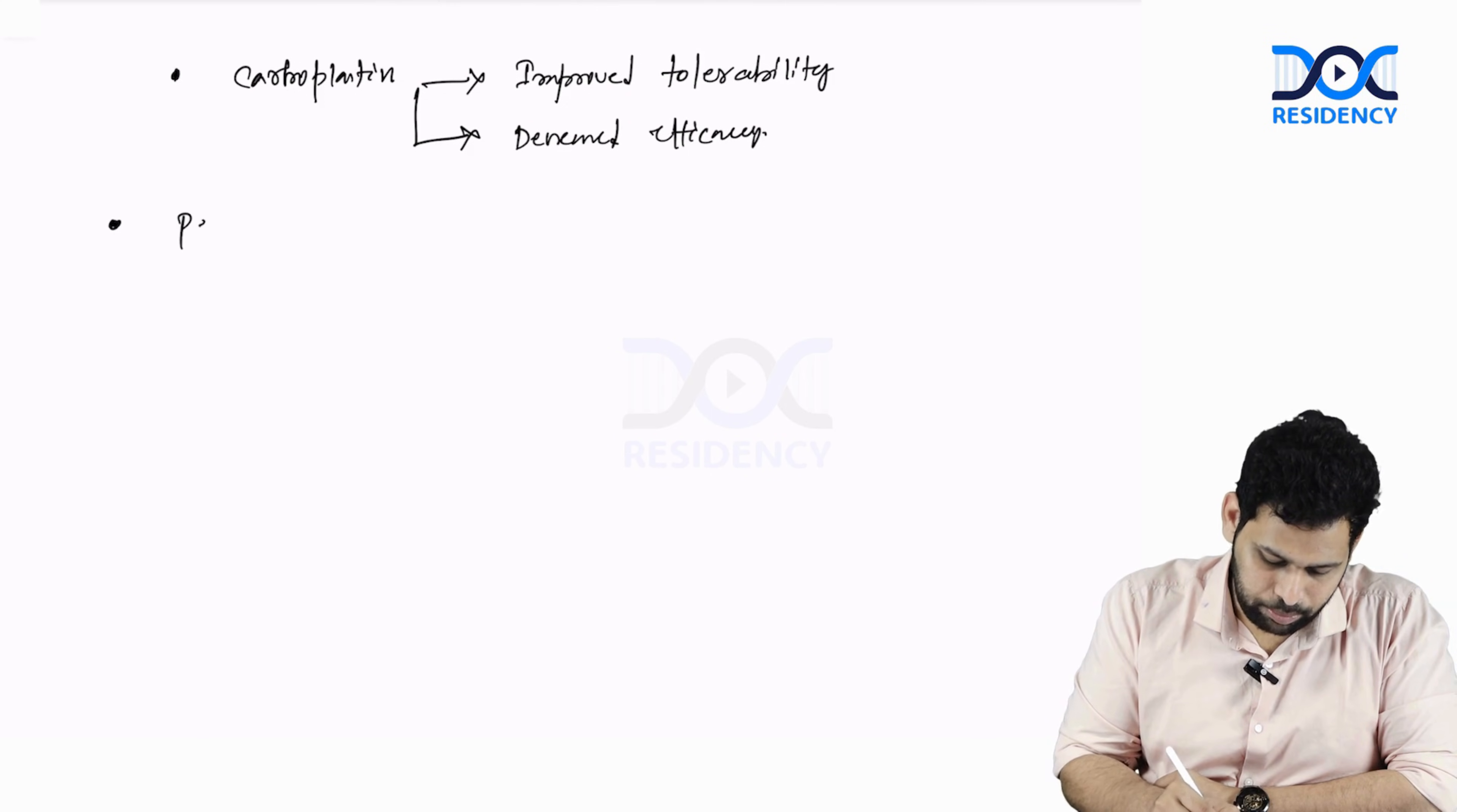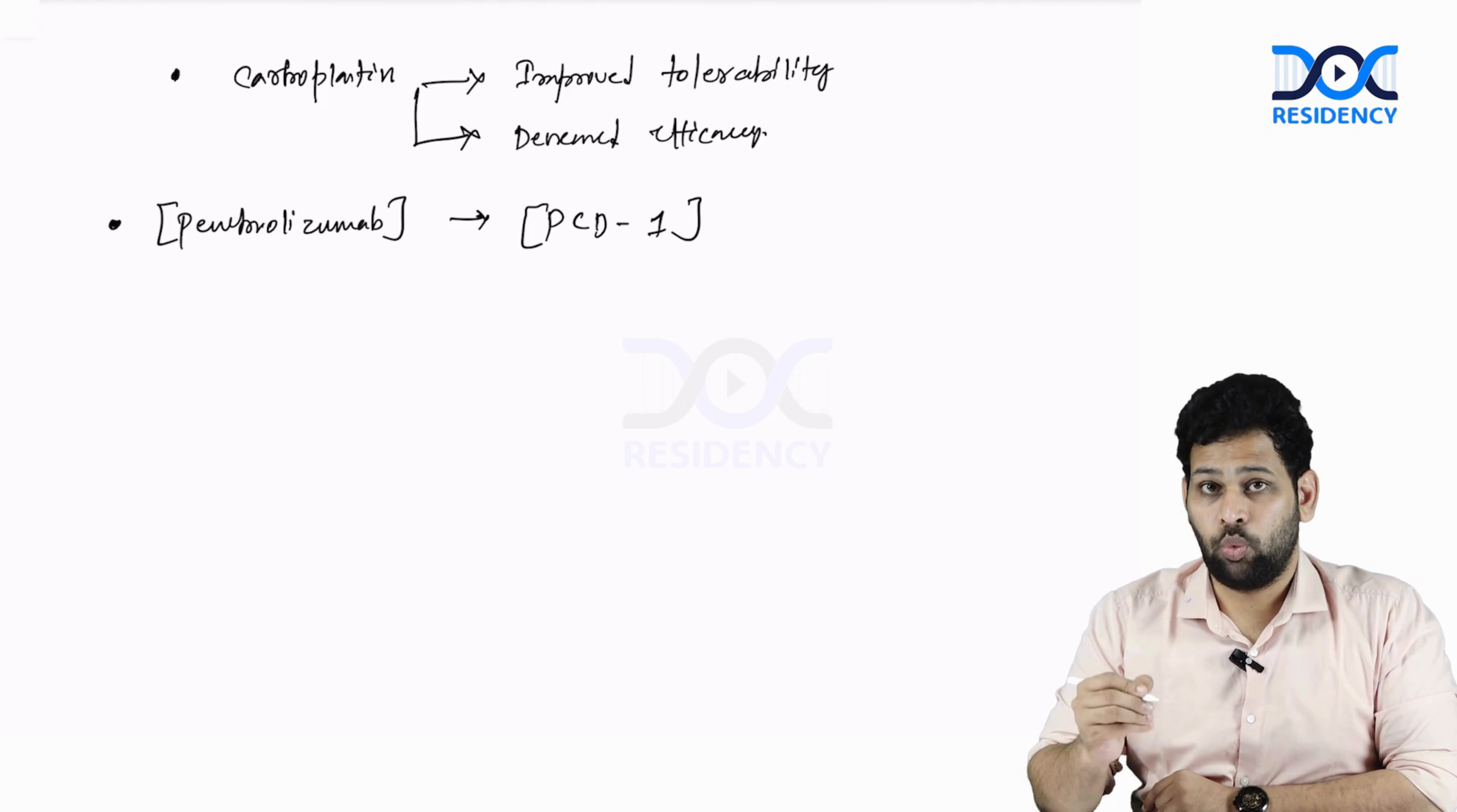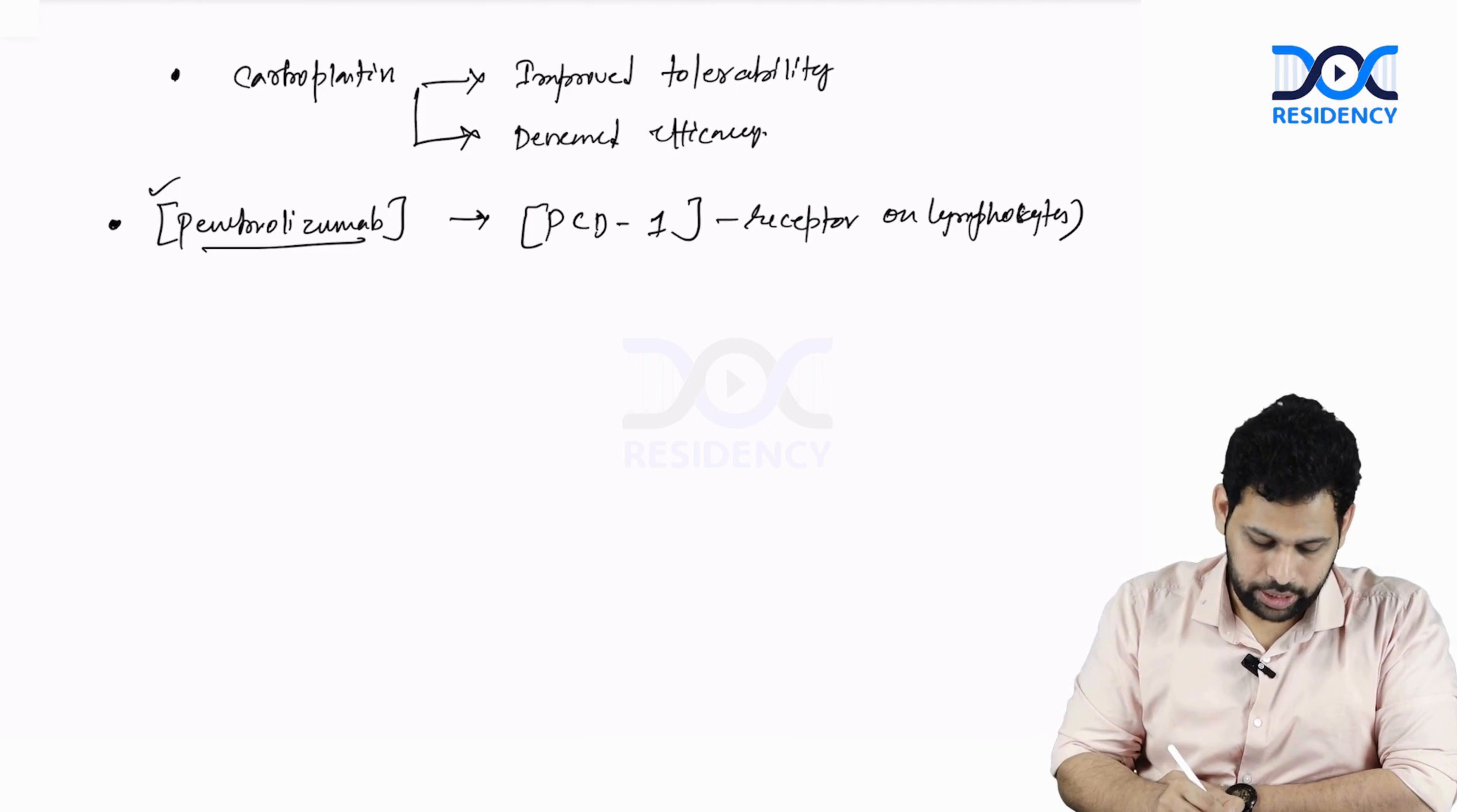The first drug is Pembrolizumab. This is a humanized antibody that targets the programmed cell death 1 receptor. This receptor will be present on lymphocytes.